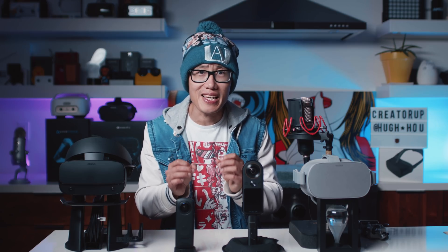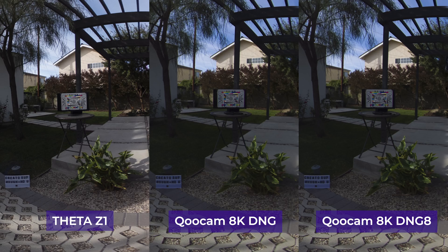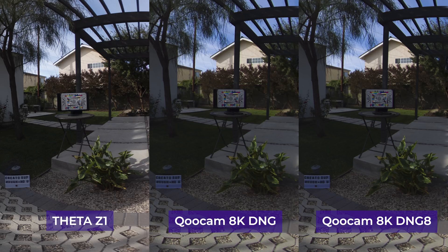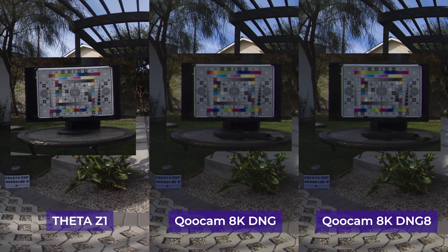The bigger issue is sharpness in distant objects. The Qoocam takes 8K photos in theory, so it should see better in distant objects than the Z1, which is 6K — but it does not. Looking at this focus chart 6 feet away, zoomed in to 100%, you can clearly see at least 3 rows on the Z1 eye chart. On the regular DNG of the Qoocam 8K, you can only see the biggest E. On DNG 8 the sharpness is almost doubled, but you can only see the second E and it is very fuzzy. So in normal sunlight, the Ricoh Theta Z1 is better — not by much, but no doubt about it.